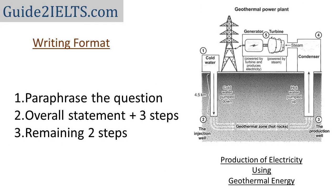We will use 3 paragraphs to write this process. First, we will paraphrase the question. The second paragraph will first have the overall statement, which will just mention the total number of steps, followed by the first three steps, and the third paragraph will have the remaining two steps.